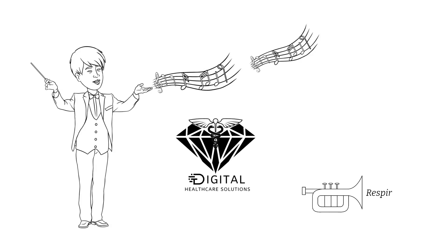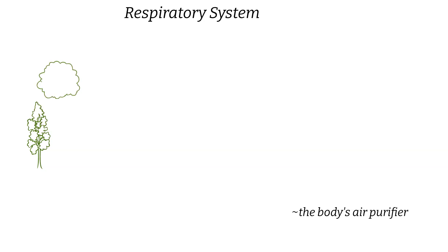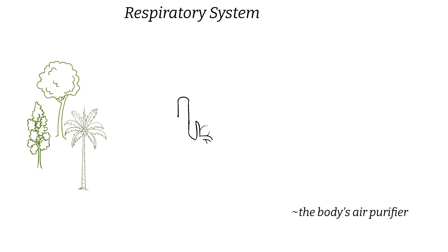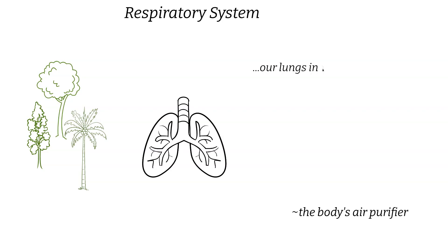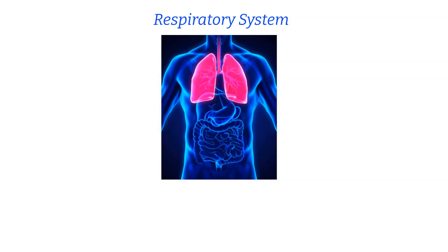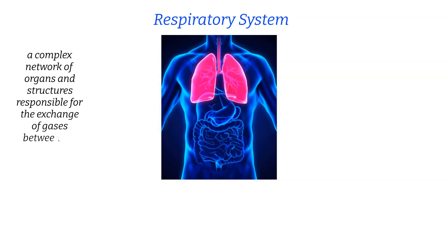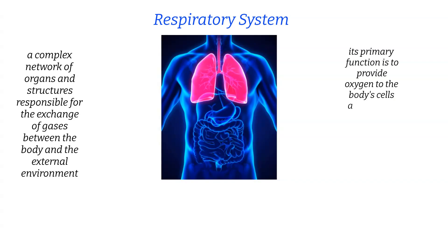The next body system is the respiratory system — the body's air purifier. Like trees that cleanse the air, our lungs inhale life-sustaining oxygen and exhale carbon dioxide, ensuring a constant supply of fresh air. The respiratory system is a complex network of organs and structures responsible for the exchange of gases between the body and the external environment, providing oxygen to body cells and removing waste products generated during cellular respiration.